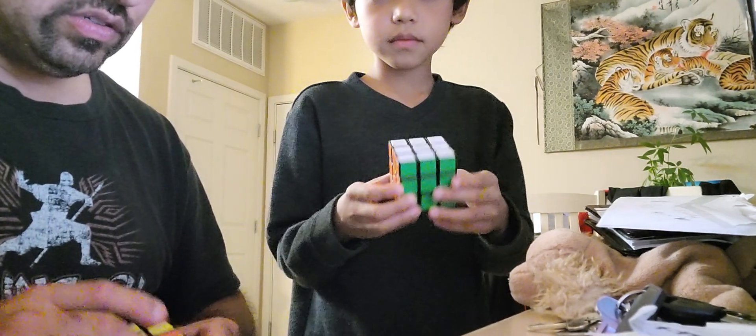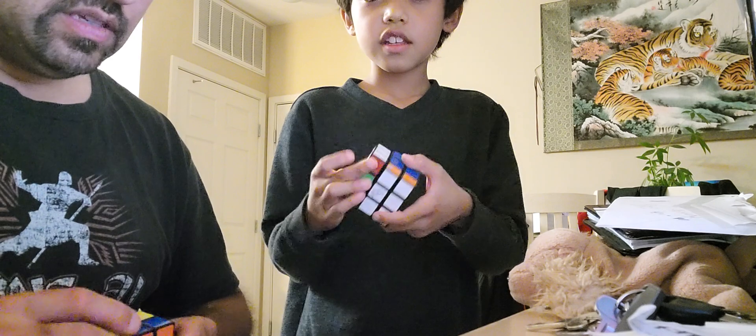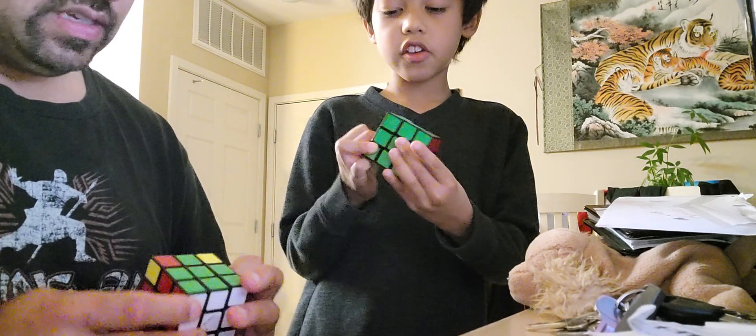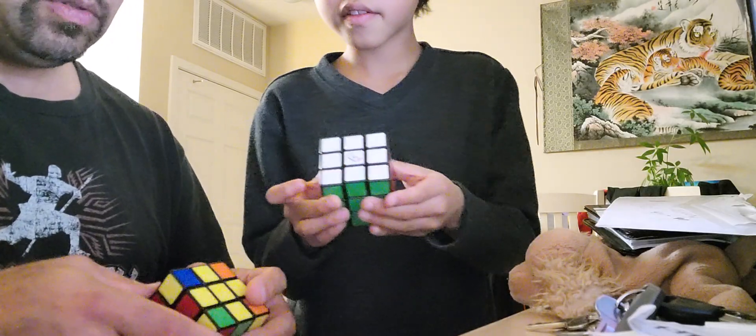And... I saw the loop. We have one corner in the correct position. So we're gonna go... Now what? U. R. U prime. L prime. U. R prime. U prime. L. And hopefully... And now it's finally time for our 1, 2, 3, 4.